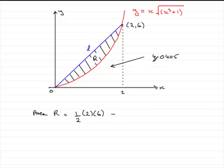And then we just need to subtract the area in here, bounded by the curve, the x axis and this line, x equals 2. So 4.0405.